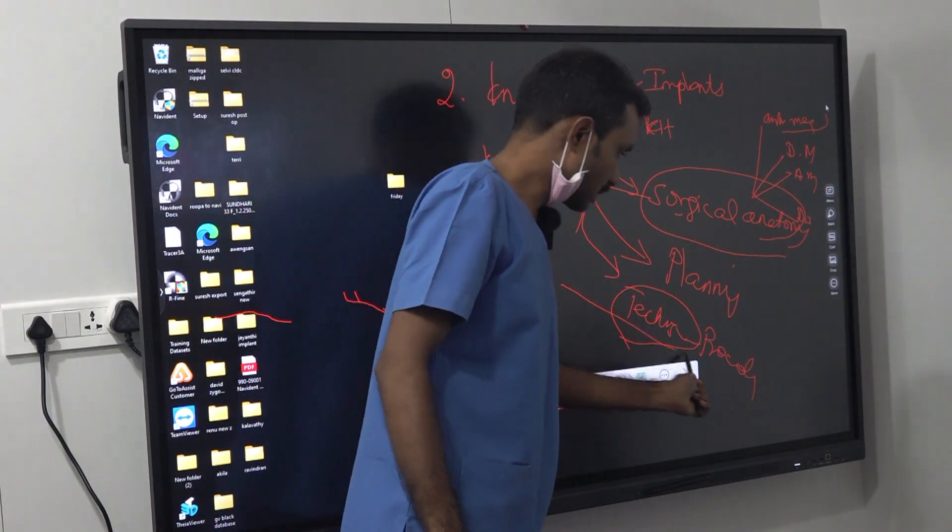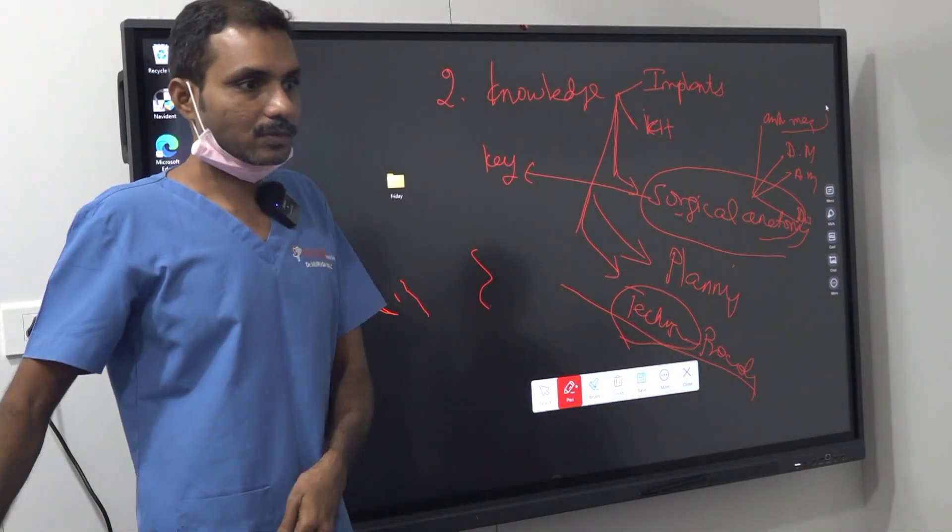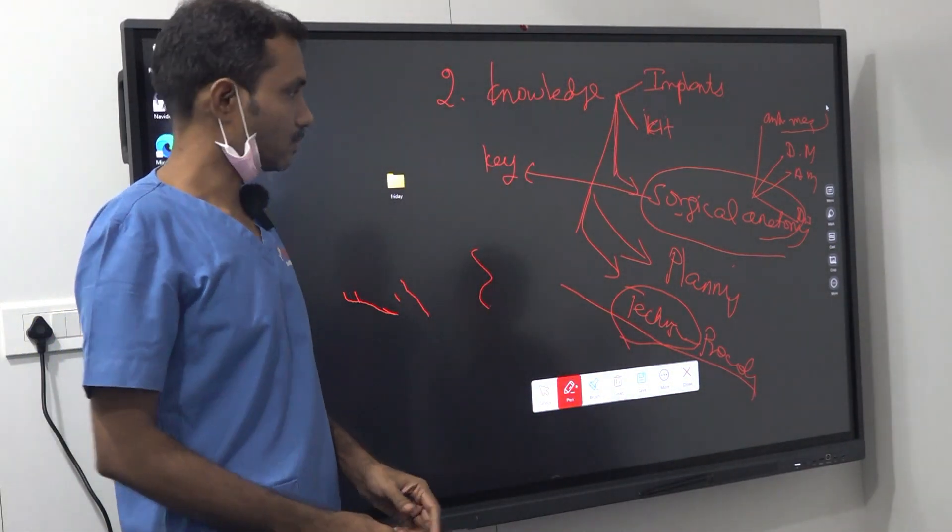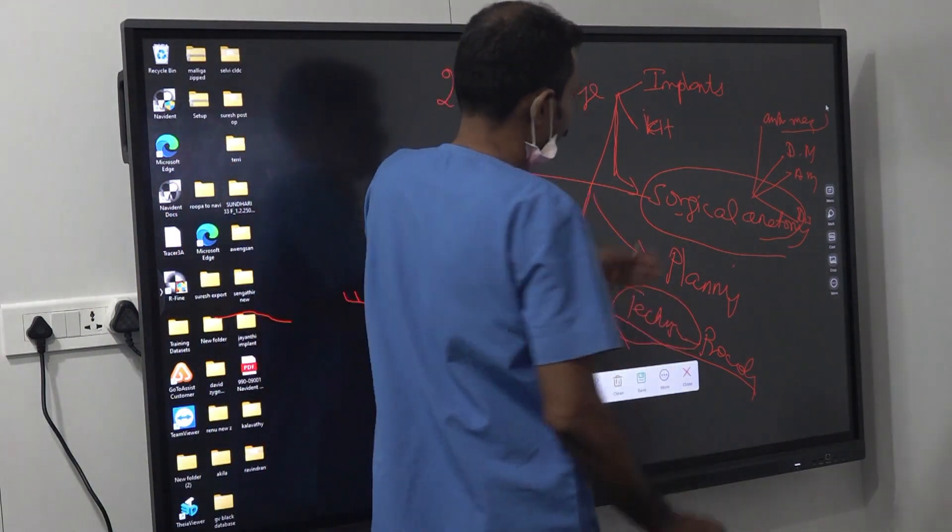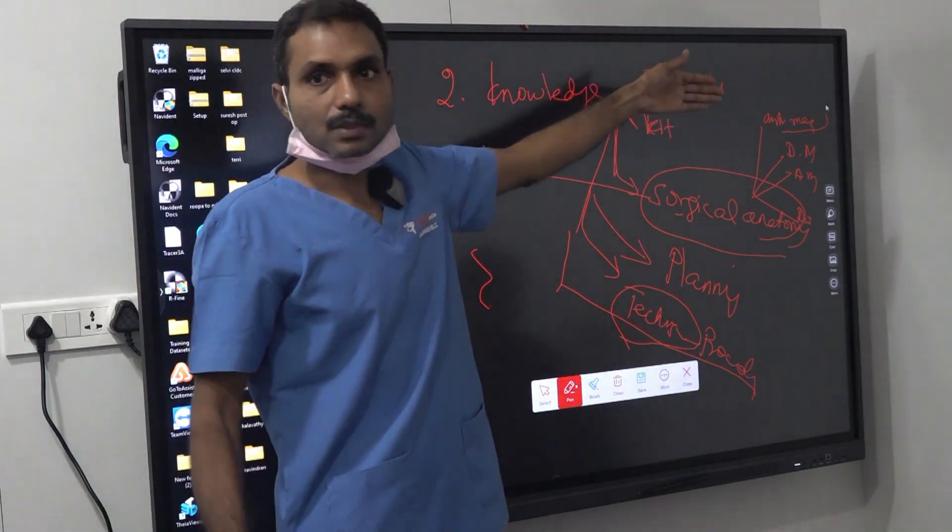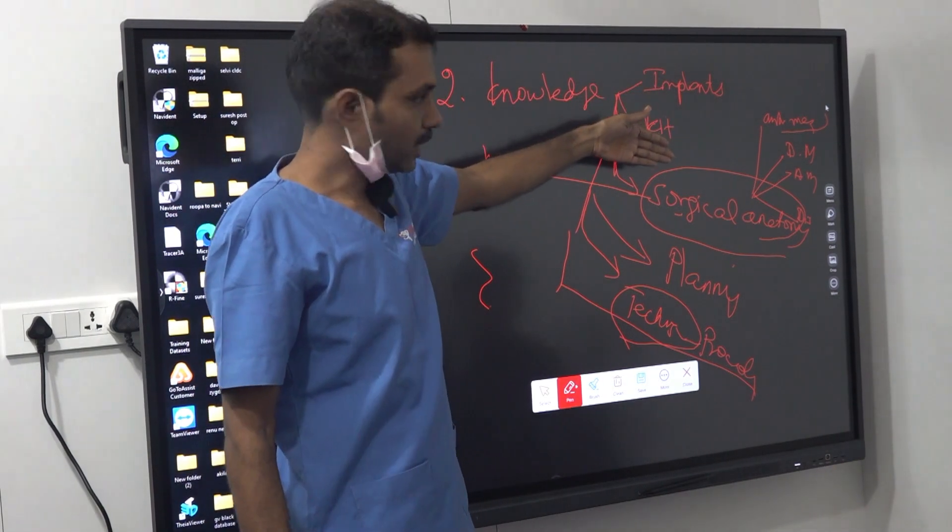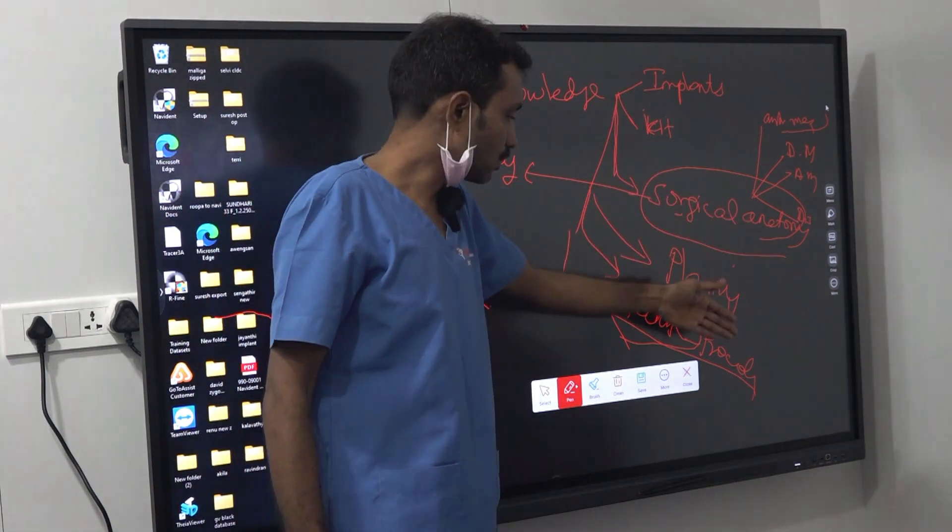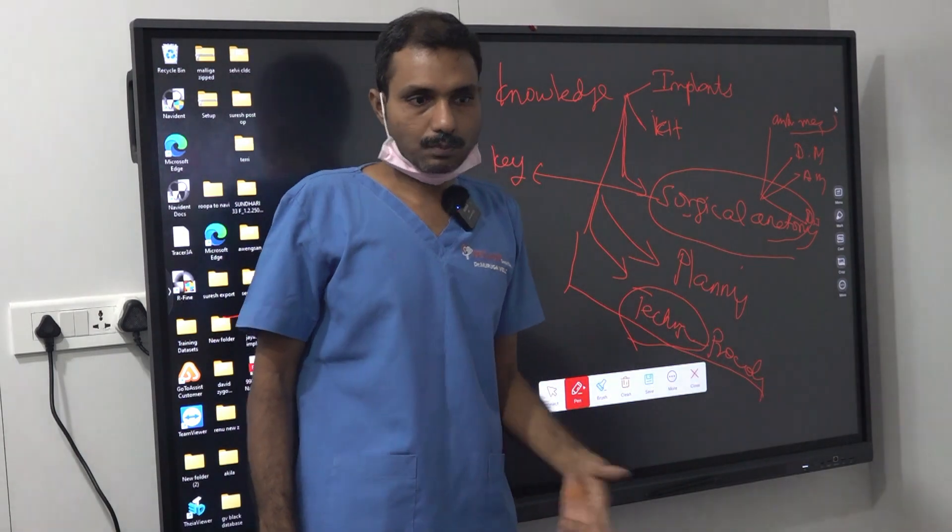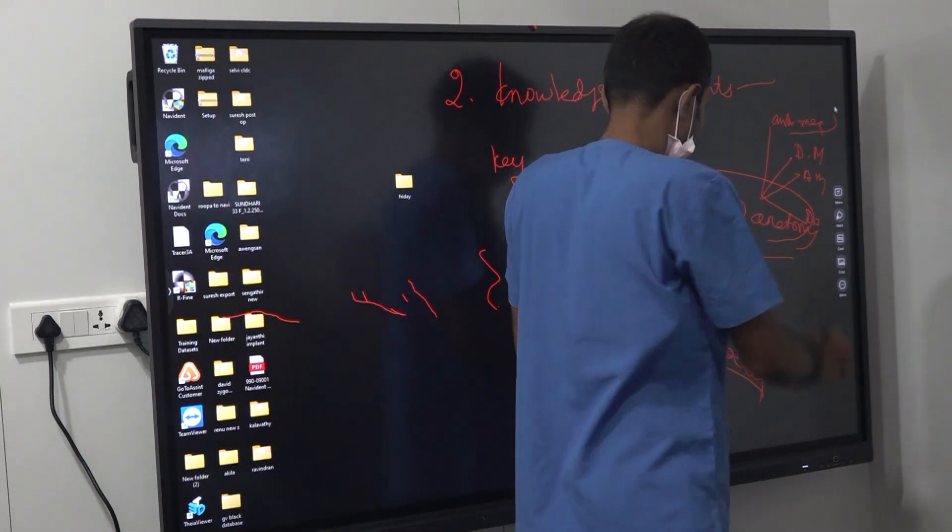Once you place the implant, the surgical part is over. The next, the prosthetic part starts. So now you understand the knowledge part - the implants, the kit, then the surgical anatomy, how to plan, and finally how to place. Now we will first see the implants.